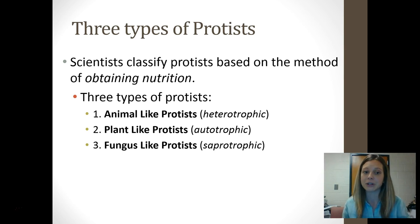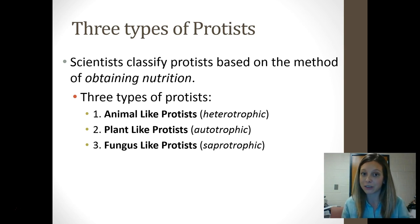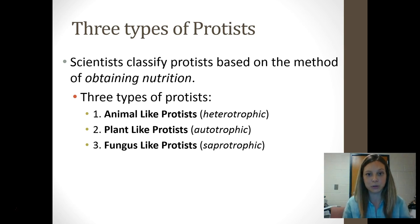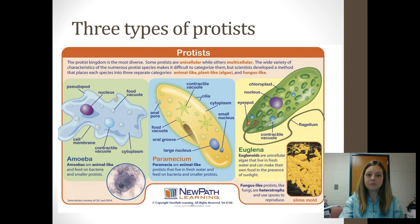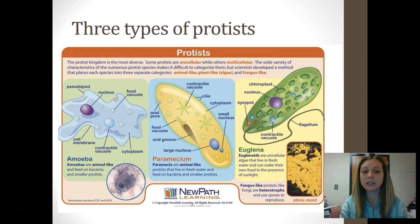The three categories of protists are: animal-like protists, which are heterotrophic just like animals; plant-like protists, which are autotrophic — they make their own food just like plants; and then fungus-like protists, which are saprotrophic, meaning they're decomposers. The specific protists we're going to look at in detail are amoeba, paramecium, euglena, and the fungus-like protists — slime molds.